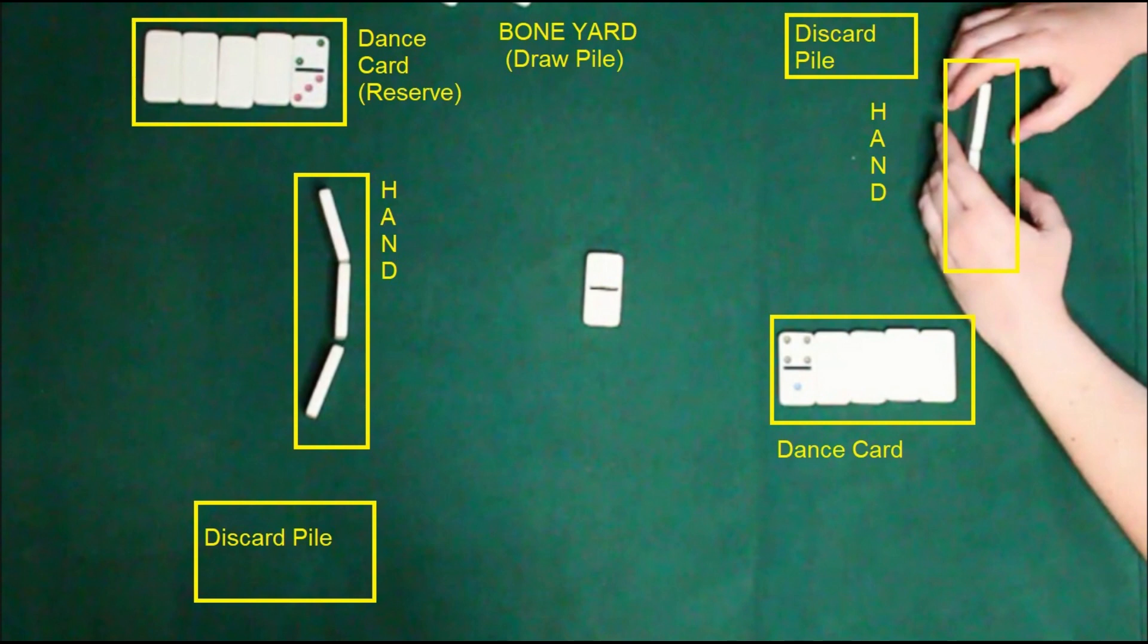Whoever has the highest double will play it first. If nobody has a double in their hand or in their reserve, at the top of their reserve, then go ahead and take all the dominoes up and re-deal and hopefully the next deal somebody will have a double. Until then just keep re-dealing until somebody does have a double either in the hand or on top of the reserve.